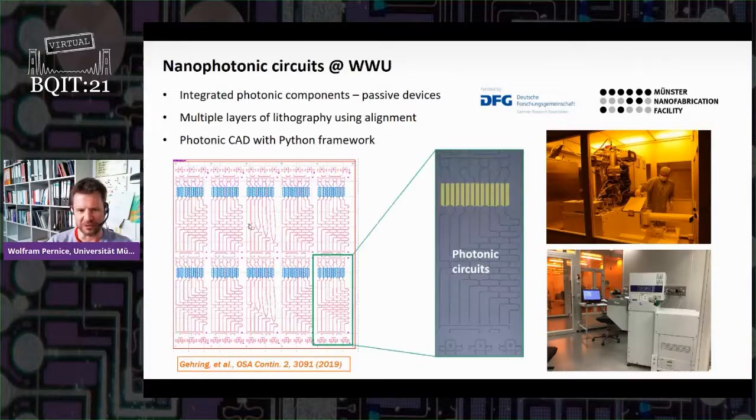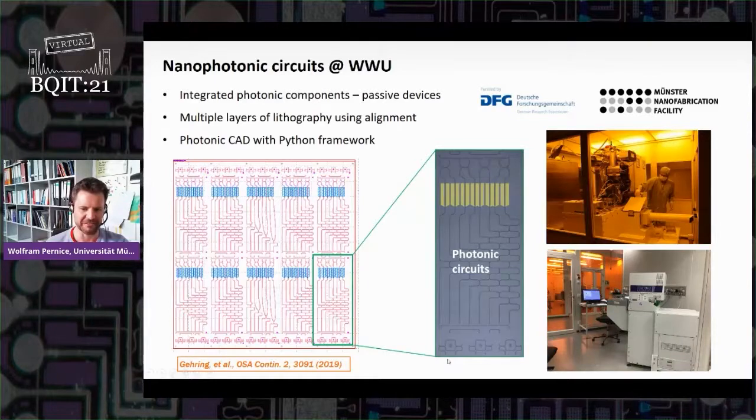By going through these process steps, we basically get these photonic circuits out where you see waveguide devices. Here are some input ports, interferometers and so forth, and also detectors that we measure at cryogenic temperatures.